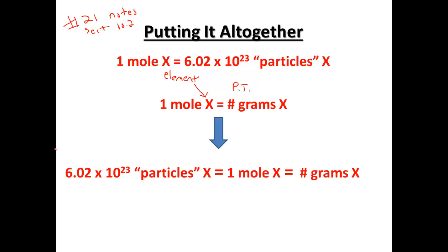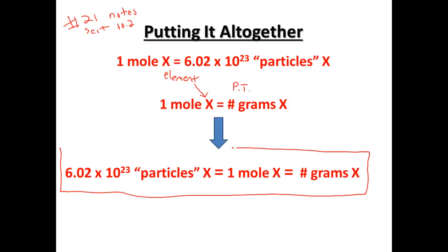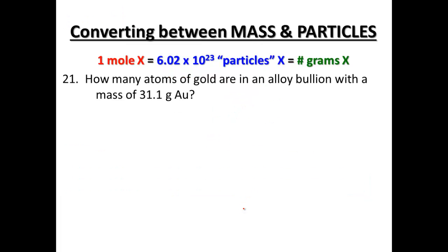In that box above number 21 in your notes, you're going to put: 6.02 times 10 to the 23rd particles of X equals one mole, equals the number of grams of X. So now we're going to be able to convert between one to the other to the other. Remember, we'll always need to stop at the moles as we're going.